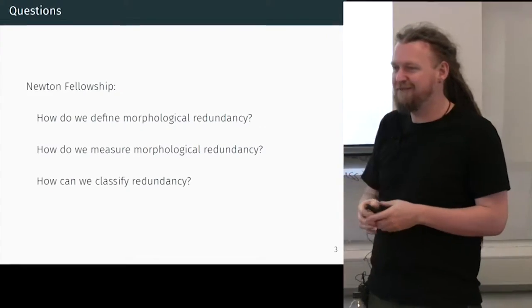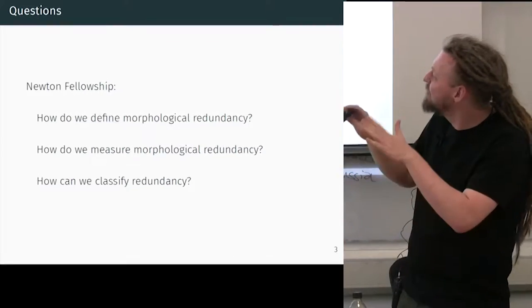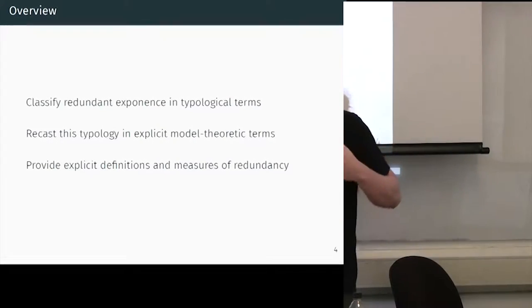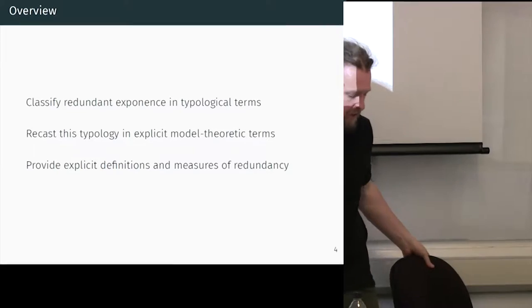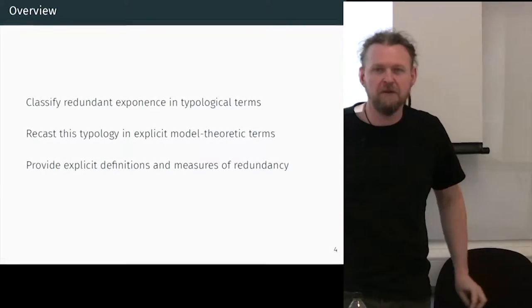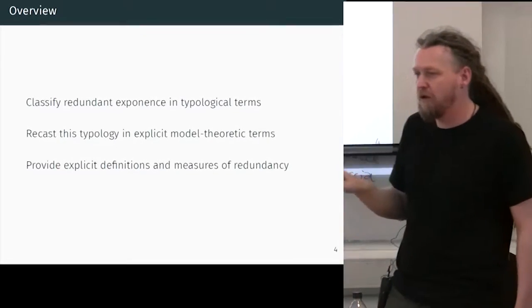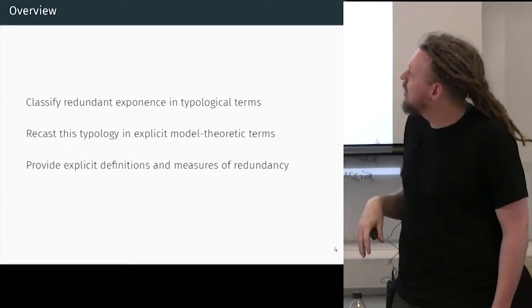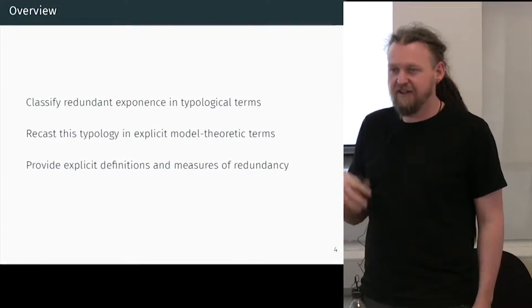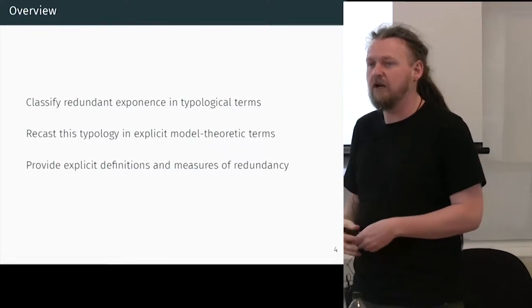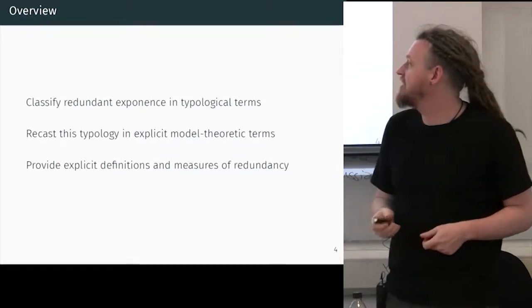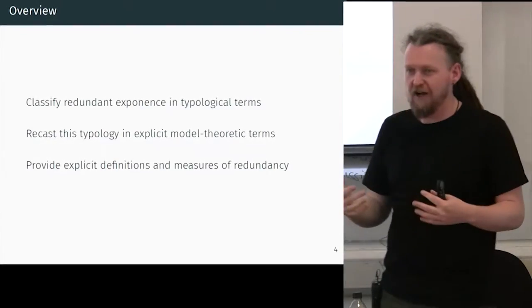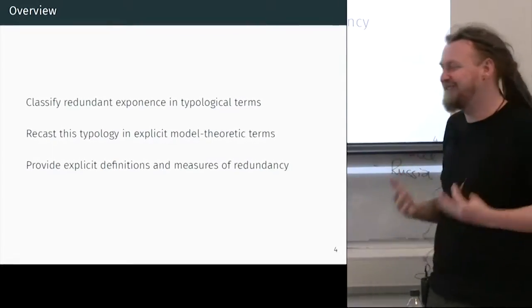That's what I'm going to go through today, and I'm going to do it in reverse order. I'll start with a very traditional canonical typology approach to describing the empirical phenomena — a typology of multiple exponents in regards to redundancy. Then I'll show how, whilst that is very insightful, it doesn't give us very much. I'm going to recast this typology in explicit model-theoretic, formal terms borrowing from set theory. I'll walk you through this — it's not hard stuff.